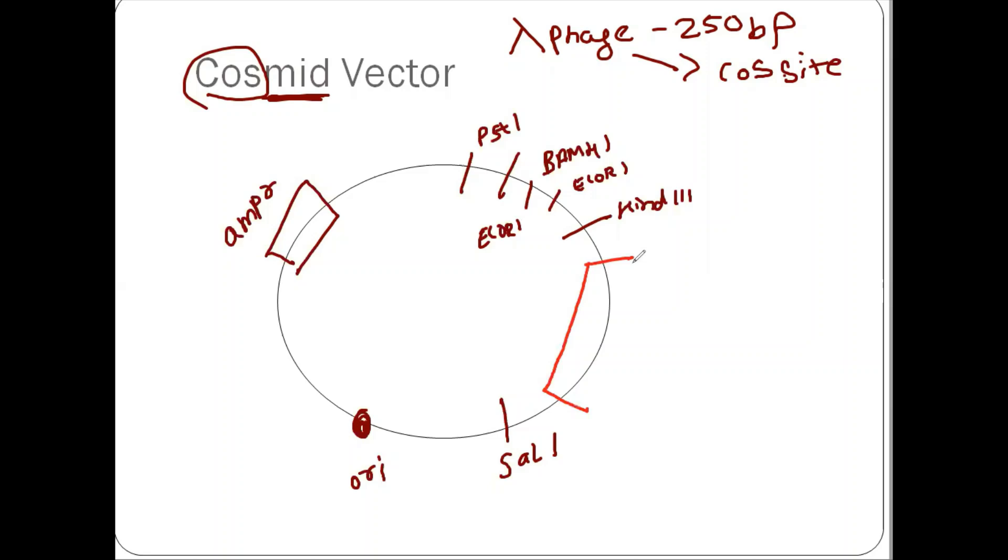In this plasmid, the lambda phage is inserted. And in this lambda phage, you have a cos site. So this is your cos site here. So this is cosmid.